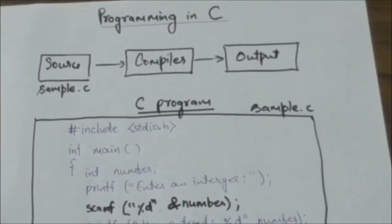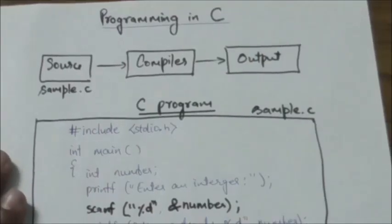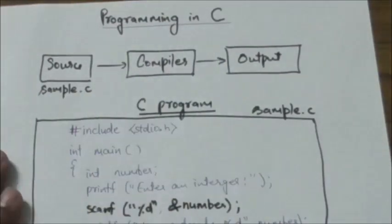Now, the computer understands only one language—that is machine language. Machine code is a binary stream of ones and zeros. So when you write a C program or C code, that C code must be converted into machine code by the compiler.